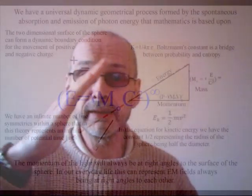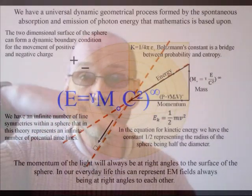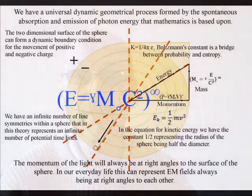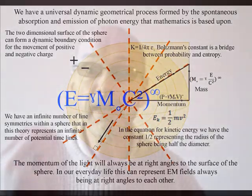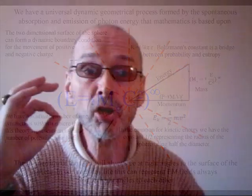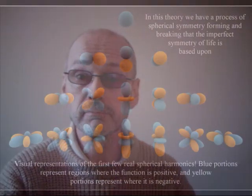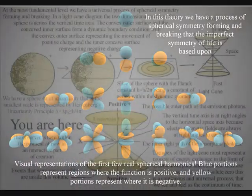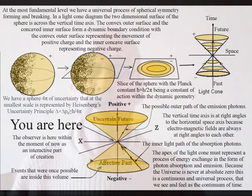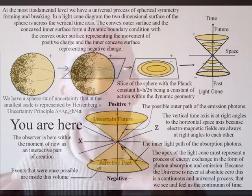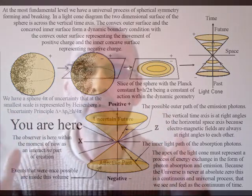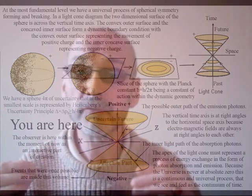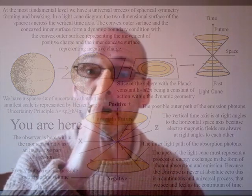We can have an infinite number of line symmetries within a sphere that can represent an infinite number of potential timelines within a continuous process of energy exchange. This forms the potential for the complexity and diversity of the universe, with each object or life form having their own timeline from the past into the future.